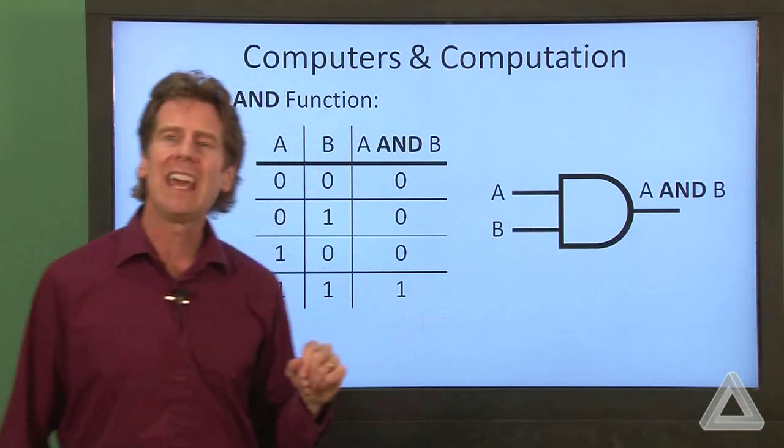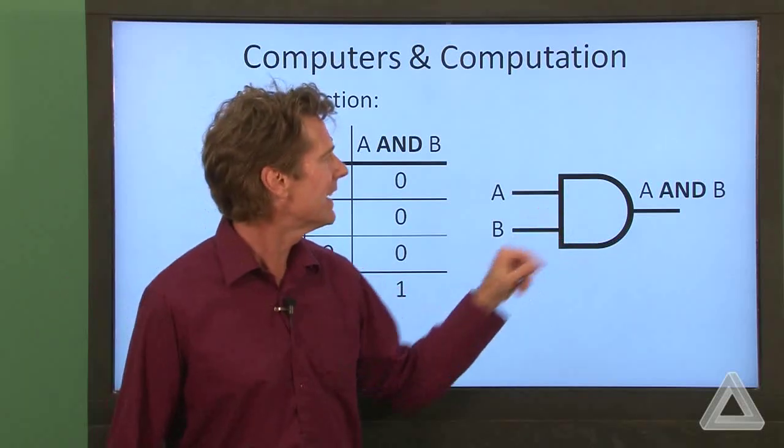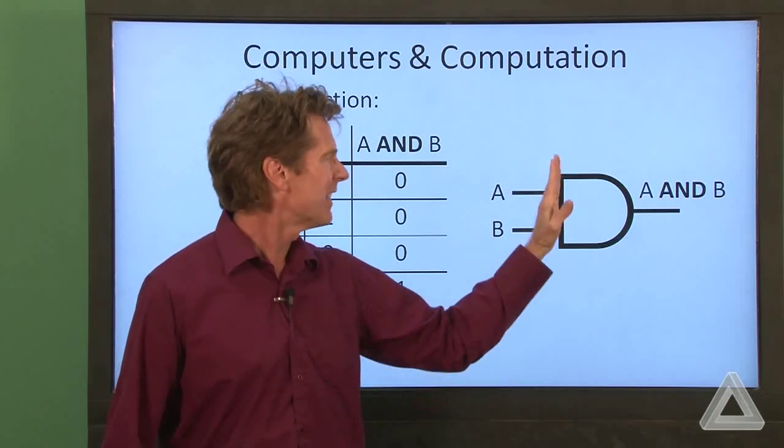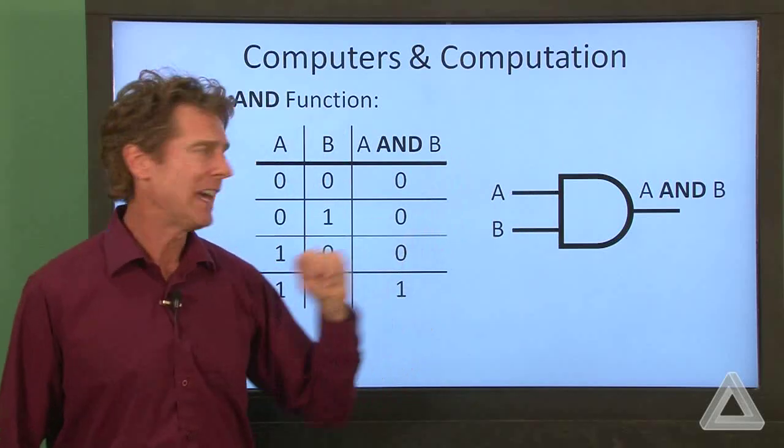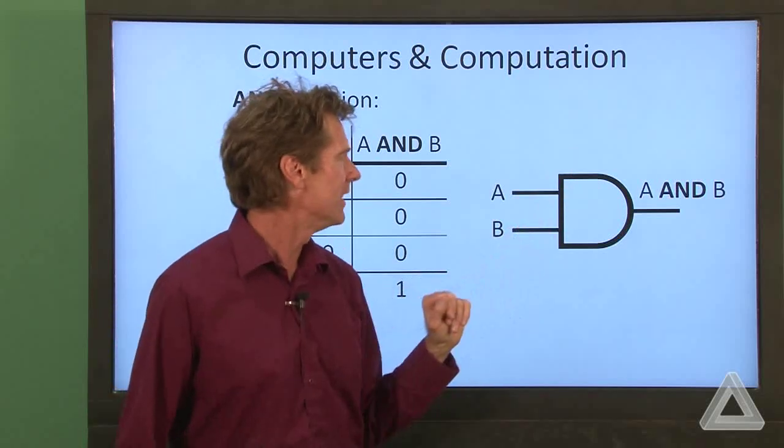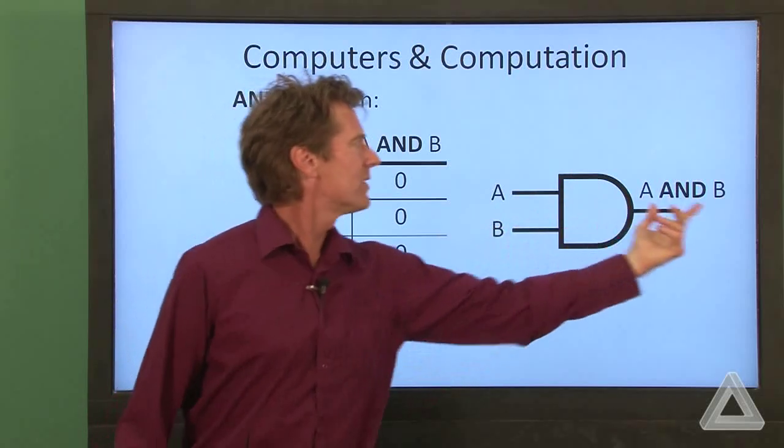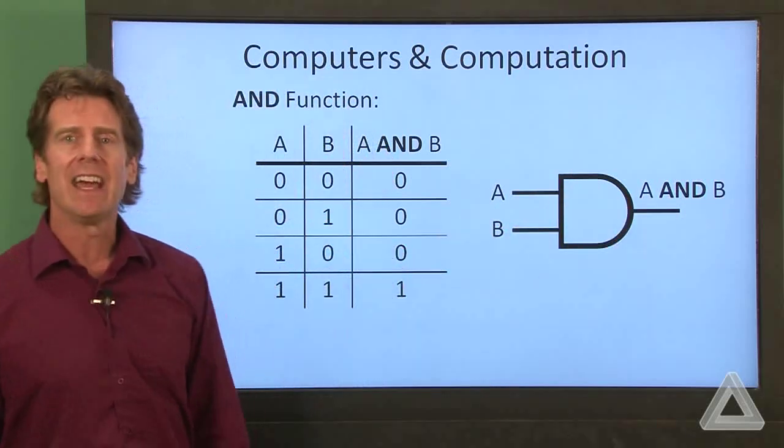Now the symbol used for this function is shown here. And now we have a straight edge on this side of the gate. And you can think of that as an A, capital A, has a straight edge. So two inputs, the output is A and B.